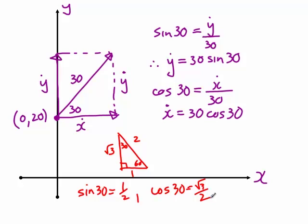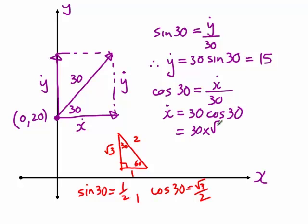Substituting back in, the y component of the initial velocity is 30 times one half, which is 15 metres per second. And the x component is 30 times root 3 over 2, which is 15 root 3 metres per second. We now substitute these into our equations of motion.